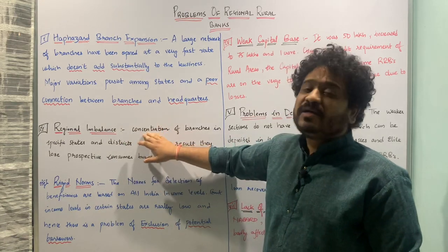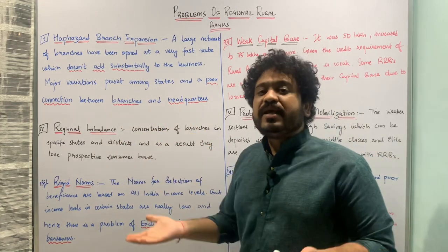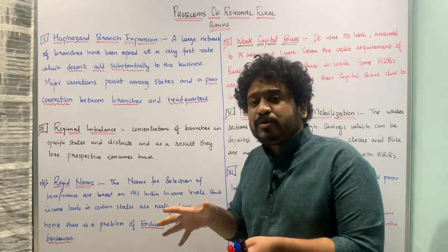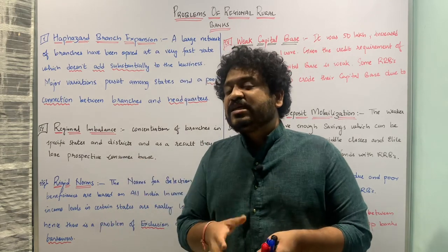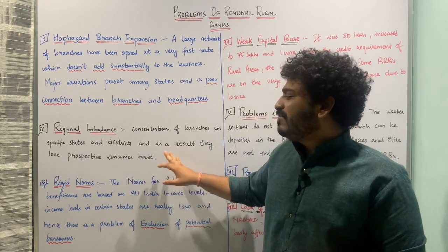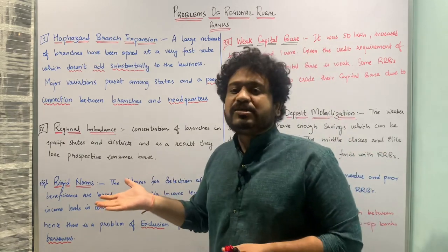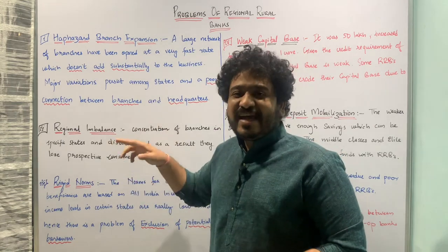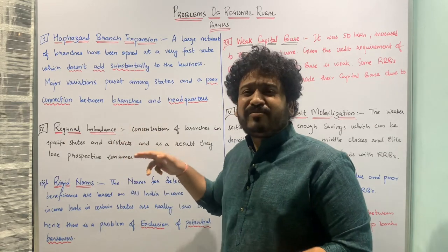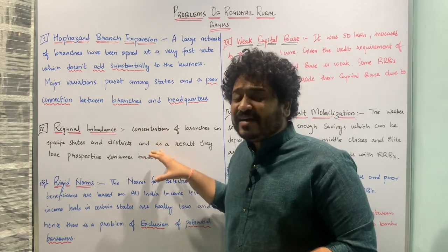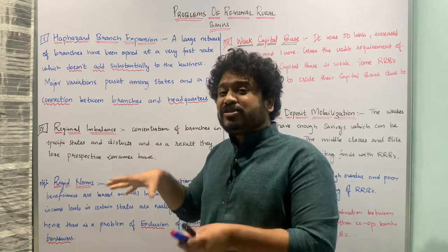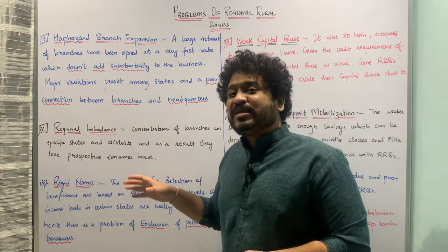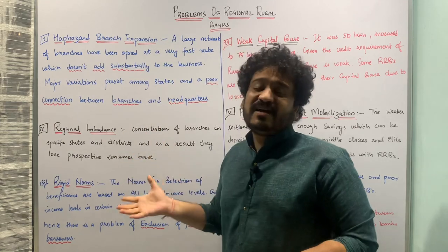The next point is regional imbalance. The concentration of regional rural banks is limited to certain states or certain districts, which is a big problem and results in loss of potential consumers. For example, there may be consumers for regional rural banks in District A, District B, and District C of Maharashtra, but most of the regional rural banks are concentrated only in District A.